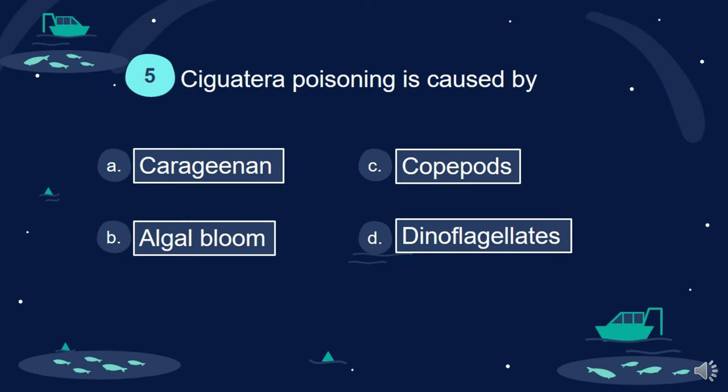Question 5. Ciguatera poisoning is caused by: A. Carrageenan. B. Algal bloom. C. Copepods. D. Dinoflagellates.